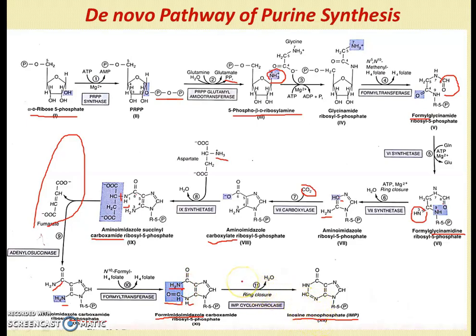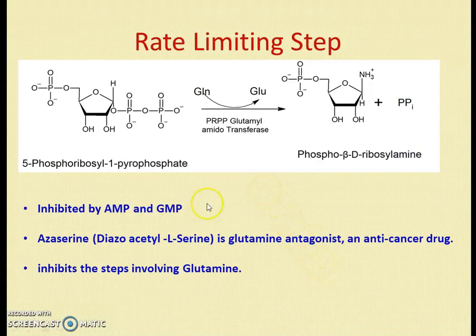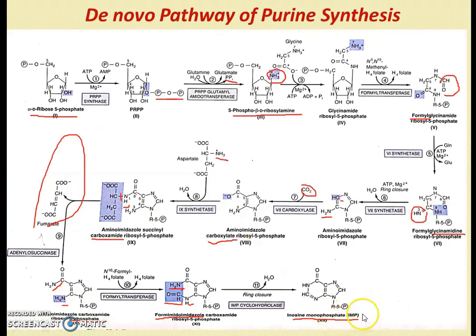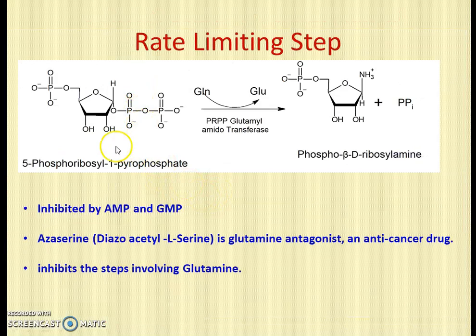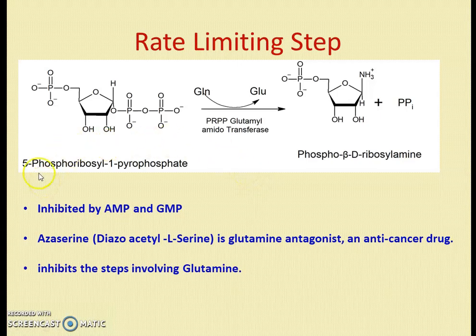In the final step, the ring is closed between the nitrogen and the adjacent carbon, resulting in the formation of inosine monophosphate (IMP). IMP is the central compound used for synthesis of both AMP and GMP. The 10-step pathway uses only 10 reactions. The rate-limiting step is Step 1 — the conversion of PRPP to phosphoribosylamine — which depends on the availability of PRPP molecules.